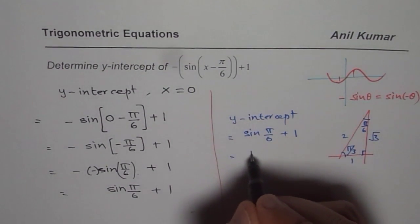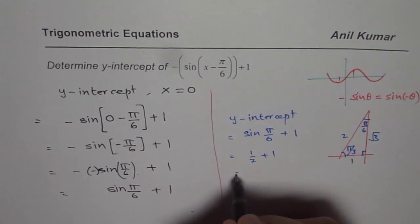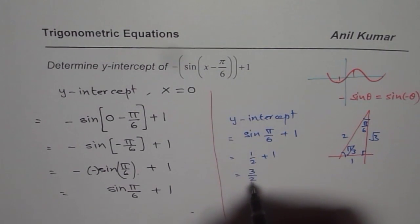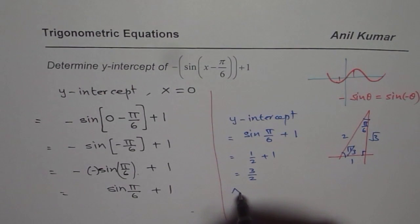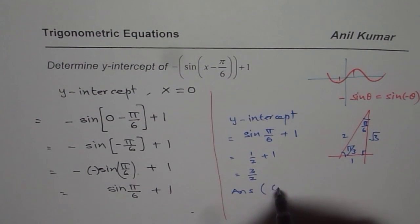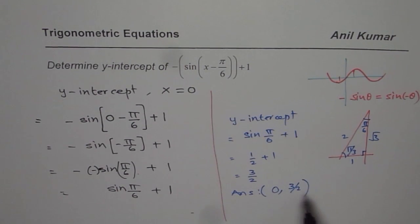So the y-intercept is at half plus 1, which is 3 over 2. The y-intercept is 3 over 2. We can write our answer as 0 for x value and 3 over 2 for y value. That becomes the y-intercept for this transformed trigonometric expression.